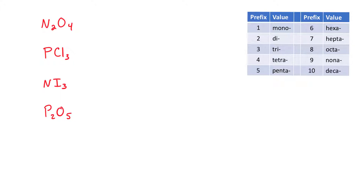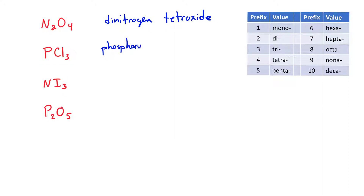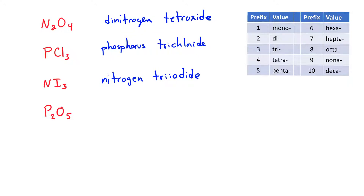Let's look at some examples. N2O4 is going to be dinitrogen tetroxide — we again have an oxide, so we delete the double vowels. For PCl3, we have phosphorus trichloride. The third example, NI3, is going to be nitrogen triiodide. And for P2O5, the answer is diphosphorus pentoxide.